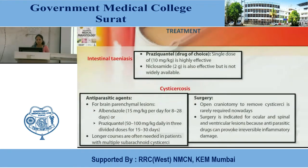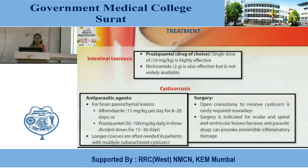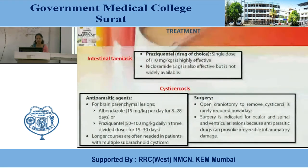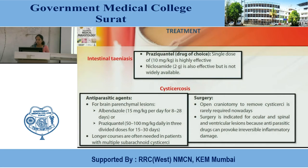Treatment. Intestinal taeniasis: drug of choice is Praziquantel — single dose 10 mg/kg, highly effective. Niclosamide 2 gram is also effective but not widely available. Cysticercosis: antiparasitic agents for brain parenchyma lesions — Albendazole 15 mg/kg/day for 8–28 days, or Praziquantel 50–100 mg/kg daily in 3 divided doses for 15–30 days. Longer courses are often needed in patients with multiple subarachnoid cysticercoids. Surgery — open craniotomy to remove cysticercoids is rarely required nowadays; surgery is indicated for ocular, spinal, and ventricular lesions because antiparasitic drugs can provoke irreversible inflammatory damage.